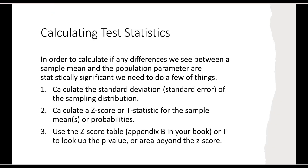In order to calculate if any differences we see between the sample mean and the population parameter are statistically significant, we need to do a few things. First, we need to calculate the standard deviation or standard error of the sampling distribution. We need to calculate a z-score or t-statistic for the sample mean or probability, depending on the type of test. Finally, we use the z-score table or t-score table to look up the p-value or area beyond the z-score.